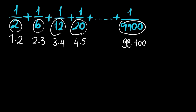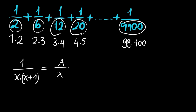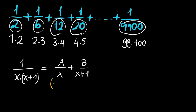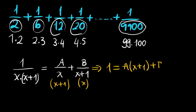Let's say this is 1 over x times (x plus 1). And we want to write this as a over x plus b over (x plus 1). To find a and b, we multiply the first term by (x plus 1) and the second by x, and write: 1 equals a times (x plus 1) plus b times x.